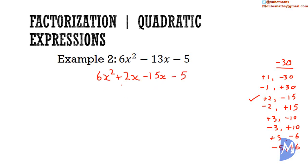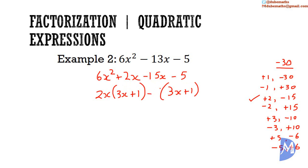The HCF of 6x squared and 2x is 2x. 2x multiplied by 3x gives 6x squared. 2x multiplied by positive 1 gives 2x. We write back the same thing in brackets: 3x plus 1. We ask what multiplied by 3x gives negative 15x — that is negative 5. Negative 5 multiplied by positive 1 is negative 5. The HCF is 3x plus 1, and we multiply by 2x and negative 5.